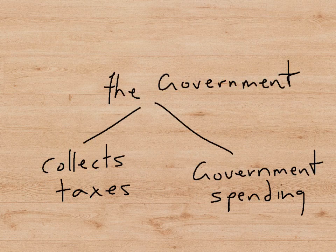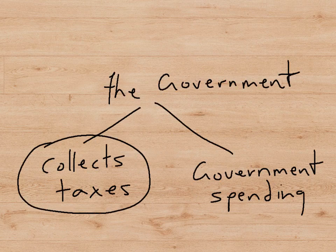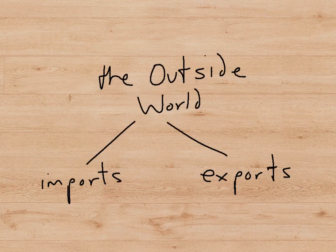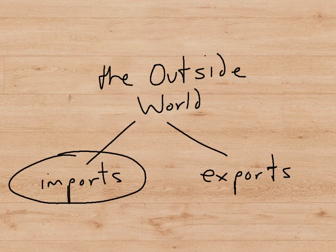The government collects taxes from firms and from households and spends the money on things such as hospitals, schools, roads, national defense, street lighting, etc. The outside world is responsible for our imports — we buy things from the outside world — but we also sell our goods to the outside world in the form of exports.